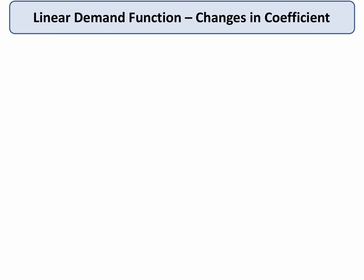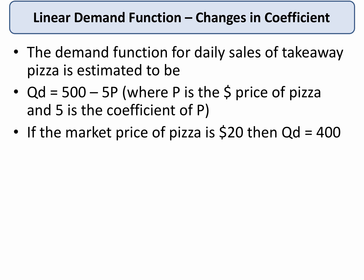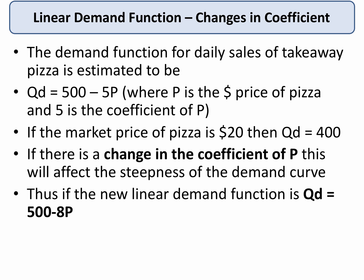Finally, let's look at changes in the coefficient — in other words, the sensitivity of demand to price. Going back to our original equation, 500 minus 5P: at a price of $20, quantity demanded is 400. Now, what happens if we change the coefficient of P? It affects the steepness of the demand curve. Let it now be 8P instead of 5P — meaning demand falls by 8 times the price as price changes.